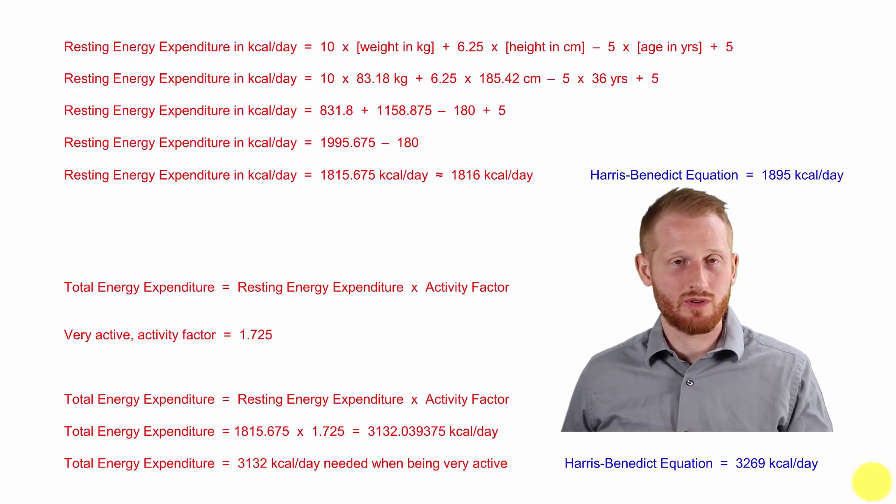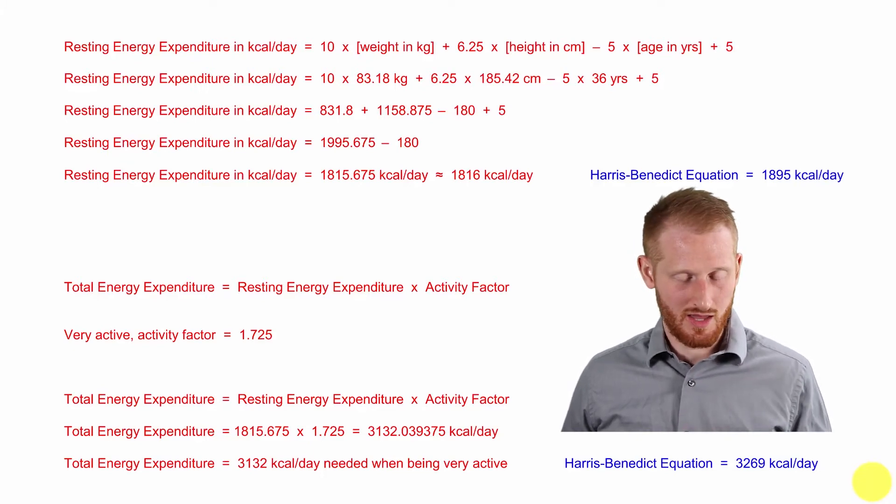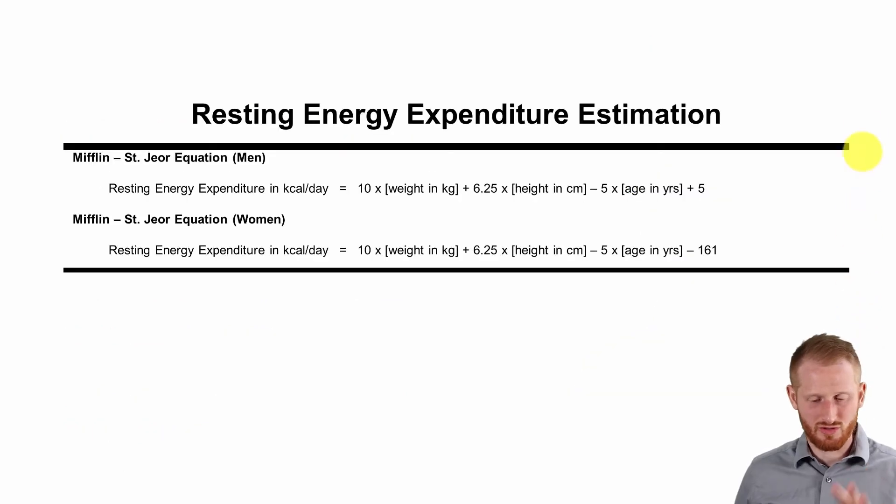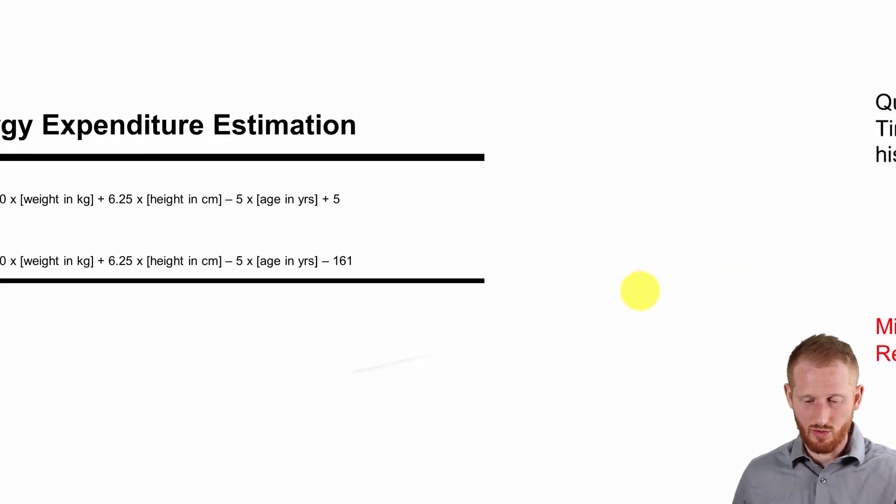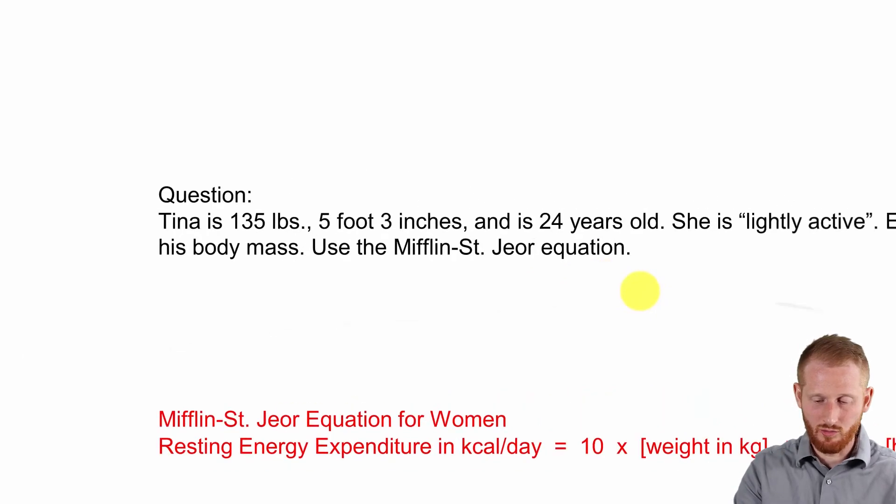So let's do one more quick example here using a woman as our example individual and showing the slight, very slight difference in the equations. Alright, so just quickly look into these equations again. Really, the only difference was what the y-intercept was. So for men, it was plus 5. For women, it was minus 161. But we're going to be using this equation here, the women's equation, in order to work through an example right now.